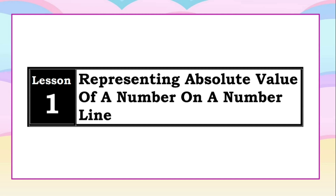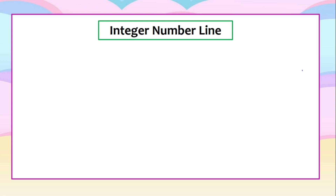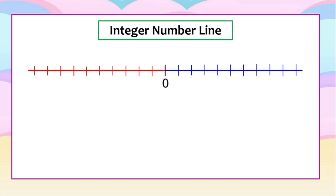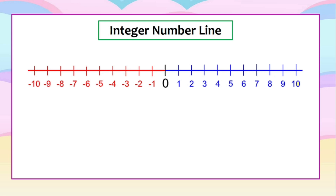Our first topic is about representing the absolute value of a number on a number line. Let's have an integer number line. We start with 0, with a horizontal line to the right and another horizontal line to the left. We have numbers starting 1, 2, 3, up to 10 and so on. Then to the left, we start with negative 1, negative 2, negative 3, negative 4 and so on.